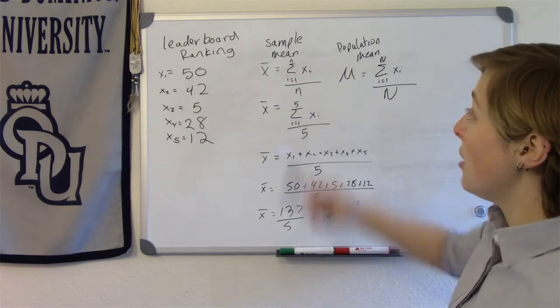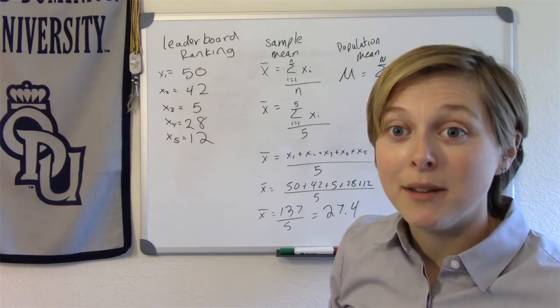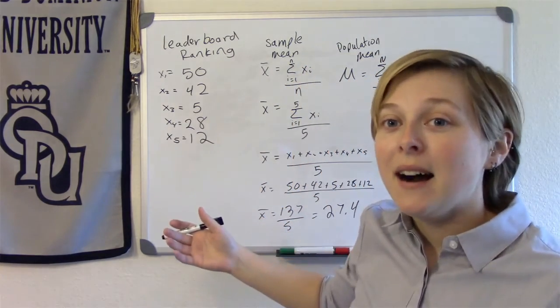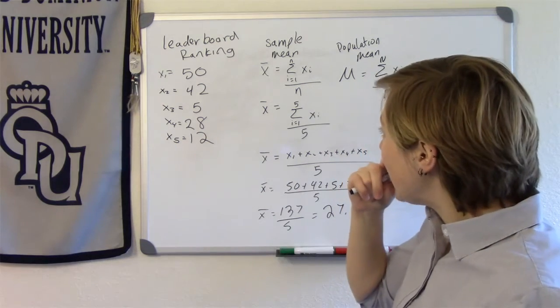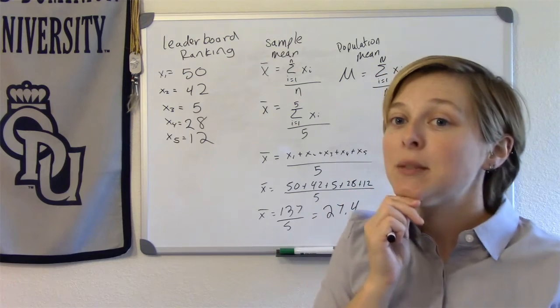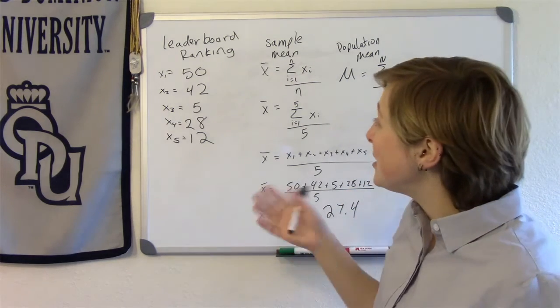So there we go. That's sample mean. That's one measure of center, and it's a pretty darn good one. Why is it so good? It uses all the data. But it has some limitations, though, too.